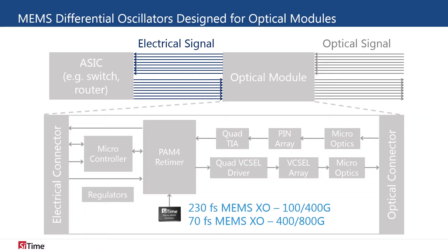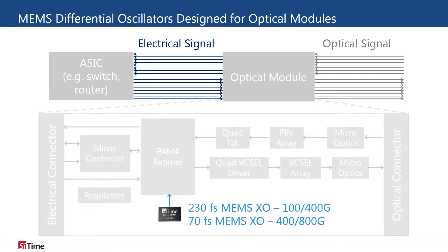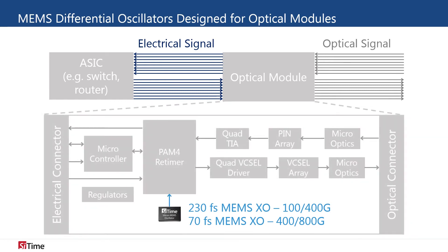The role of an optical module is to convert incoming optical signals into electrical signals and outgoing electrical signals back to the optical format for transport. For 100 gigabit networks, SciTime's Elite platform differential oscillator is the ideal timing solution with 230 femtosecond RMS phase jitter and an operating temperature up to 105 degrees C.